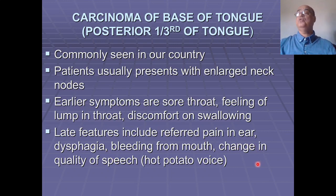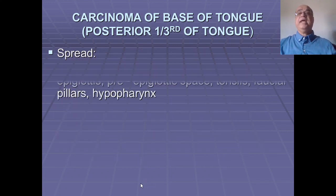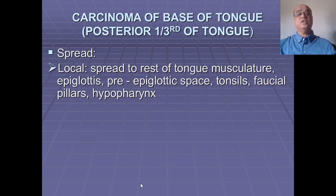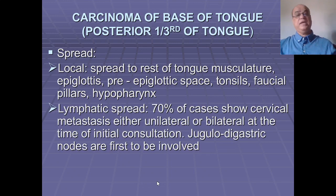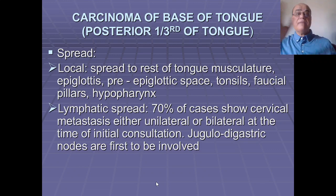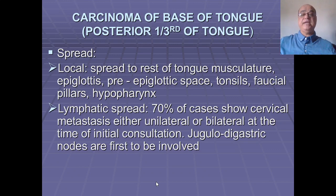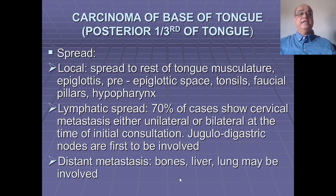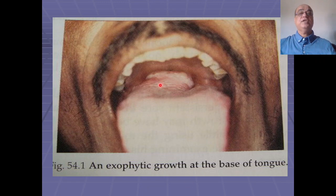Late features include referred otalgia, dysphagia, bleeding from the mouth, and change in quality of speech — described as 'hot potato' speech. Local spread can involve the tongue musculature, epiglottis, pre-epiglottic space, tonsils, faucial pillars, and hypopharynx. Lymphatic spread: 70% of cases show cervical lymph node metastasis, either unilateral or bilateral. As the base of tongue is a midline structure, bilateral jugulo-digastric lymph nodes are the first to be involved.